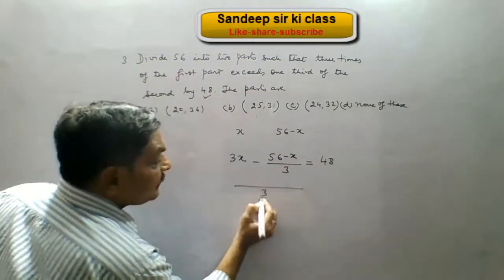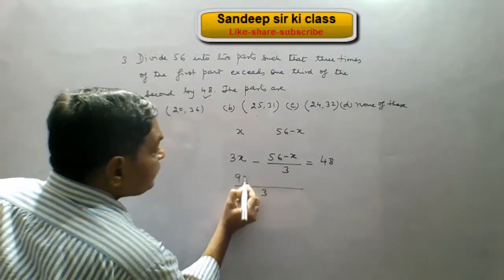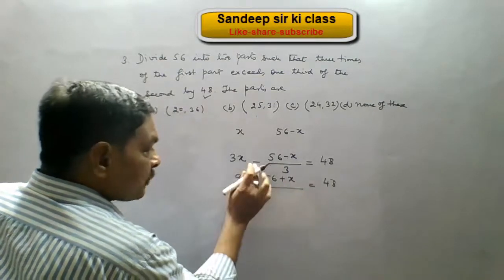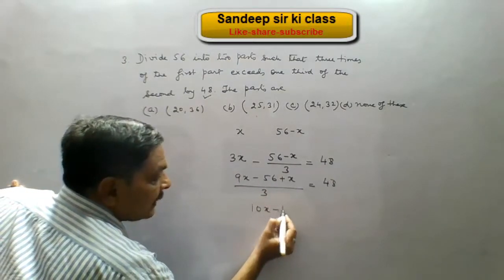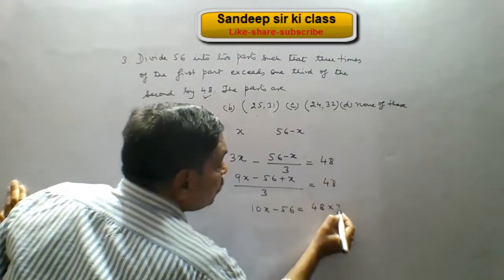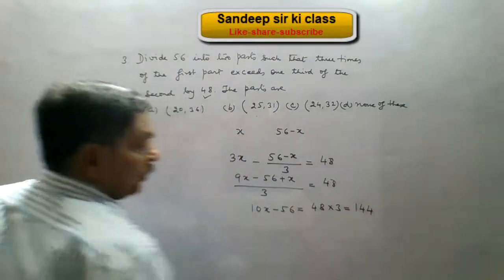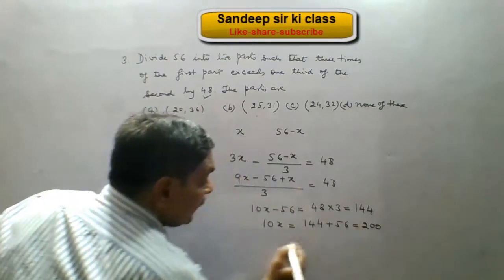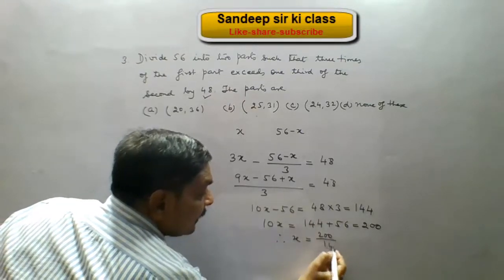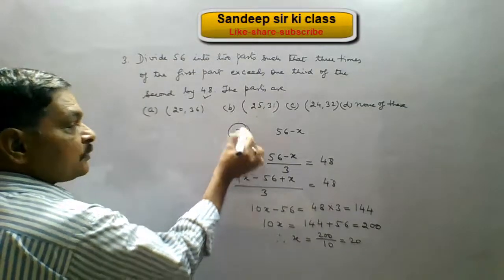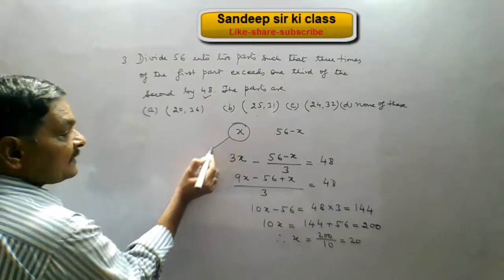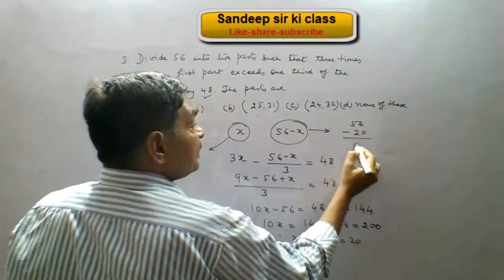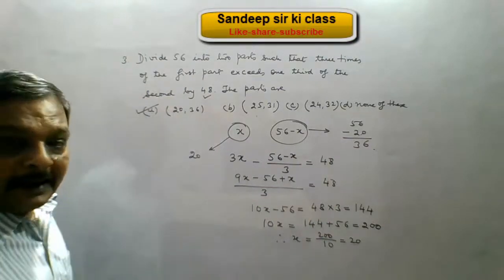To solve, multiply through by 3 (the LCM): 9X minus (56 minus X) equals 144, giving 10X minus 56 equals 144. So 10X equals 144 plus 56, which is 200, and therefore X equals 200 ÷ 10 = 20. The other part is 56 minus 20, which equals 36. Hence option A is the correct answer.